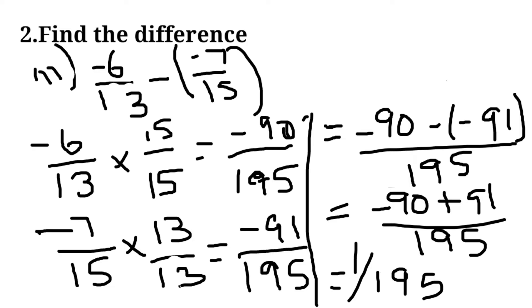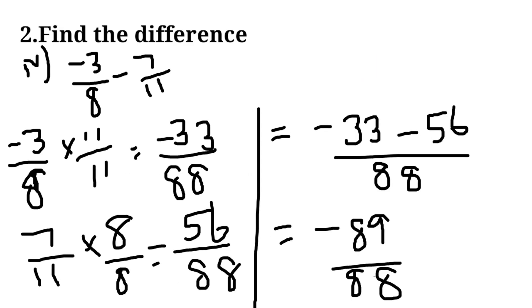Third sum: minus 6 by 13 minus of minus 7 by 15. Here LCM is 195 and then we add minus 90 plus 91 by 195, equal to 1 by 195.